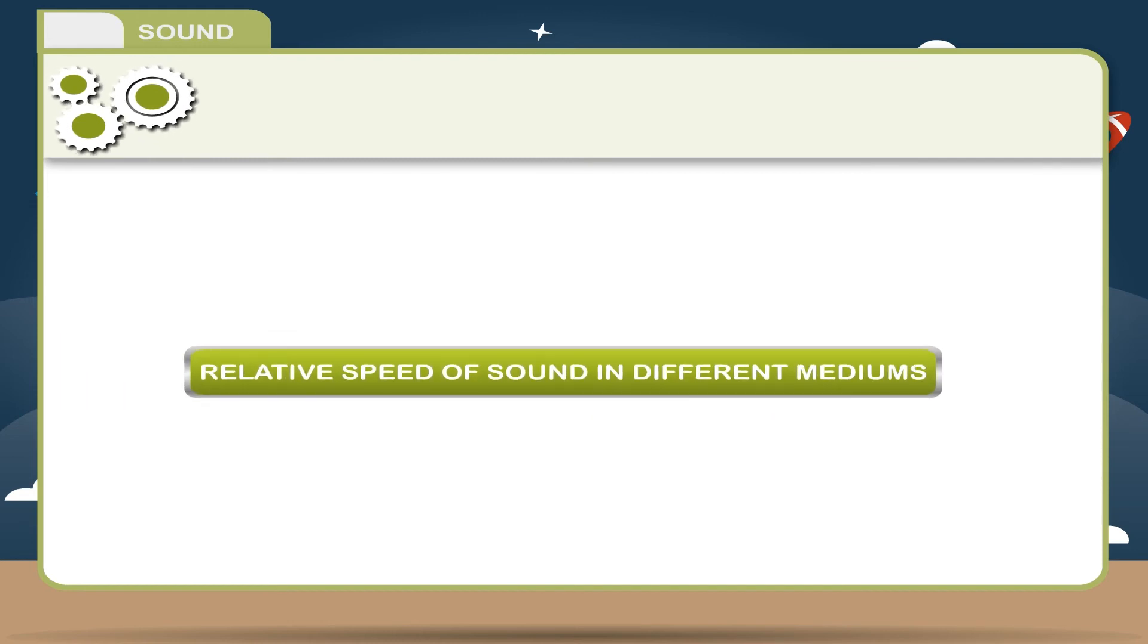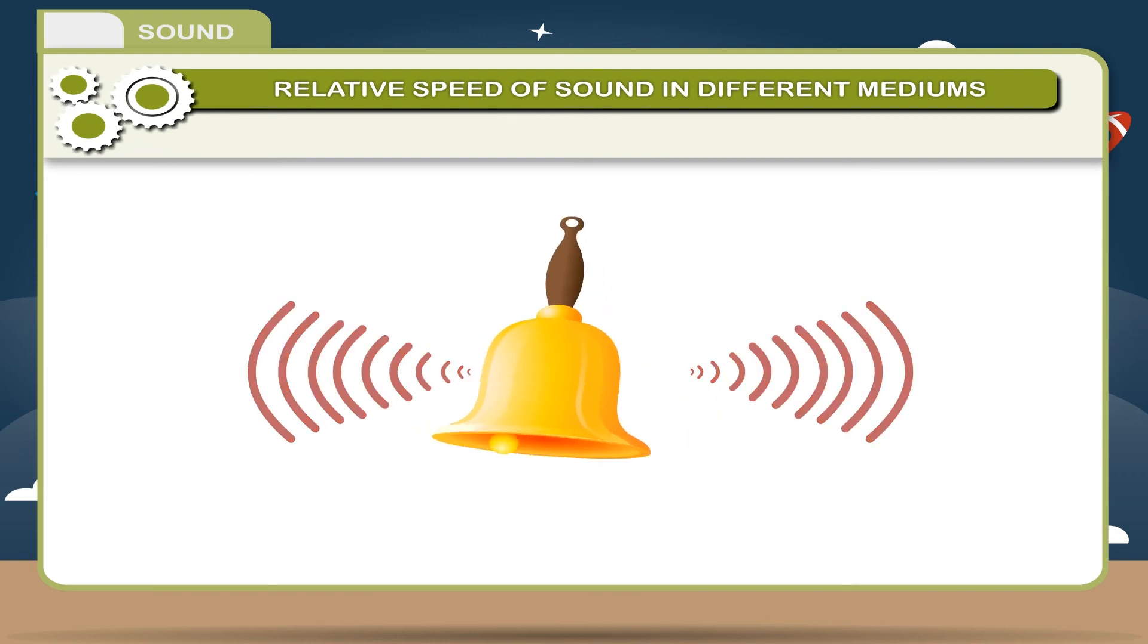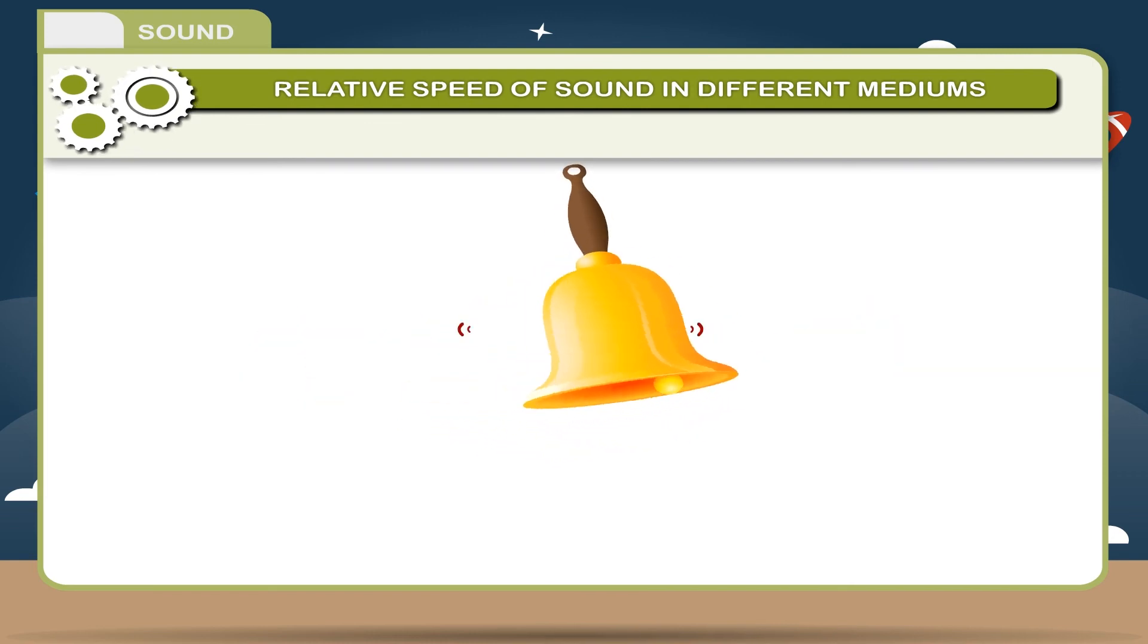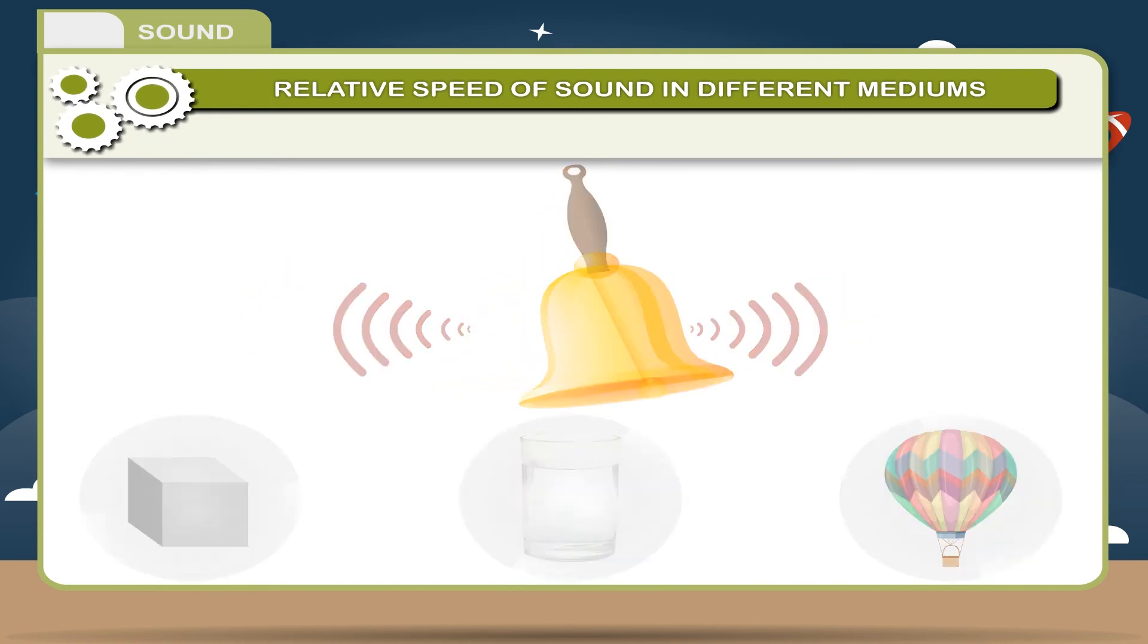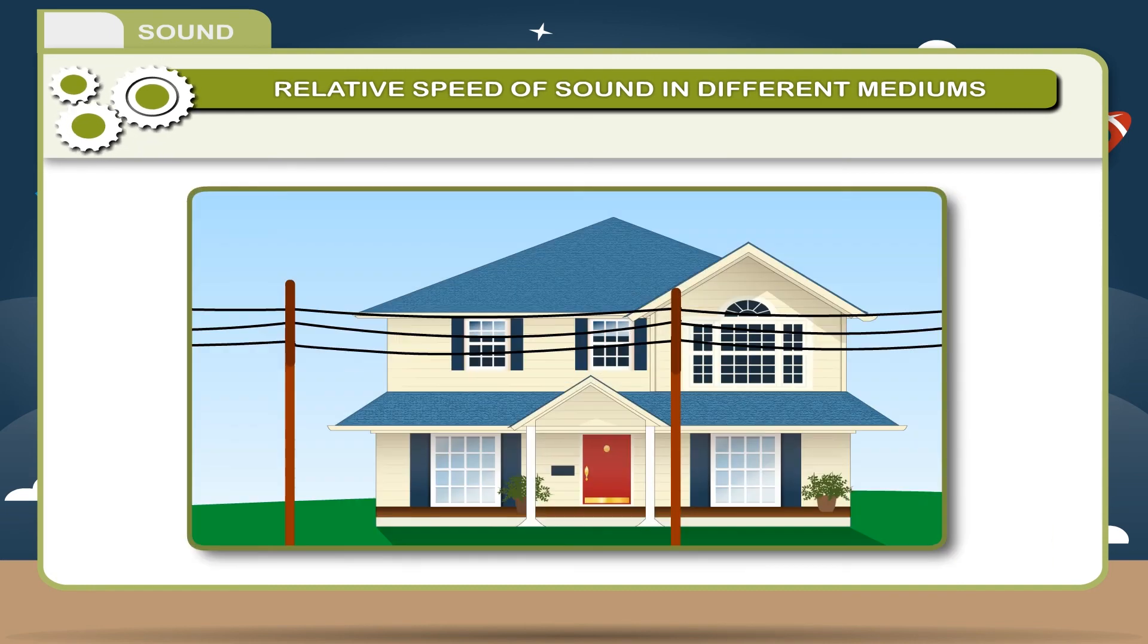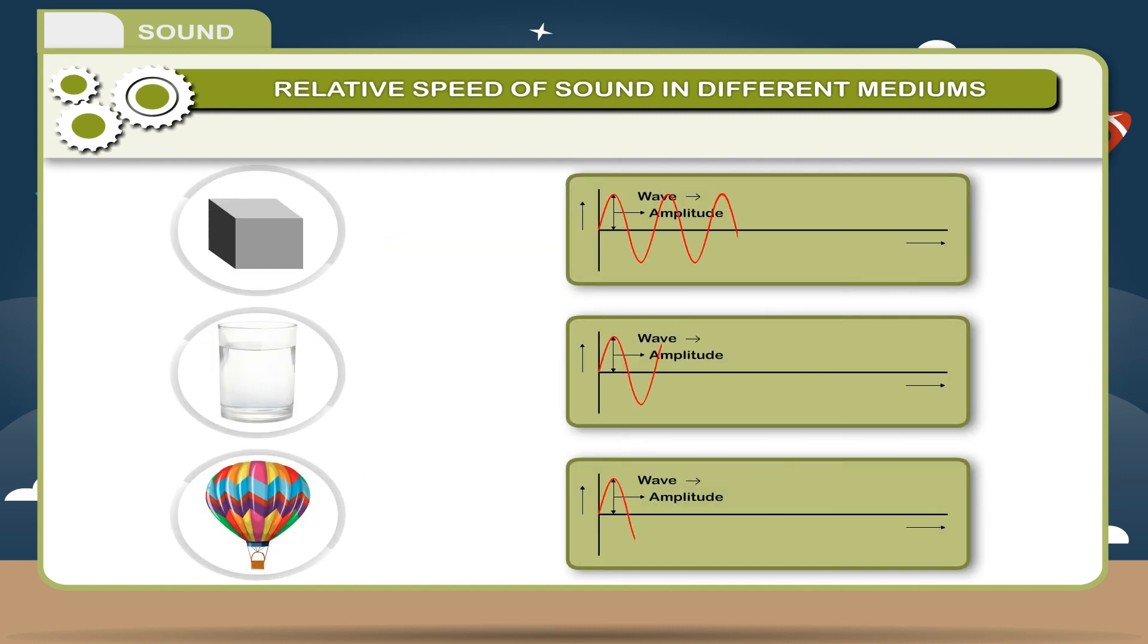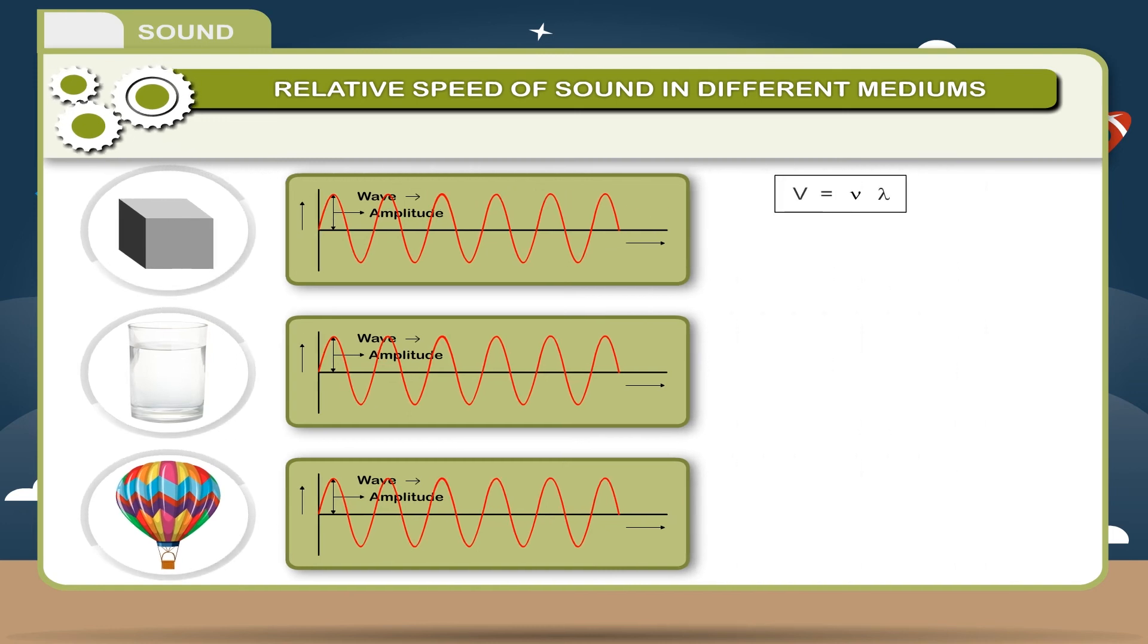Relative speed of sound in different mediums. Sound waves can travel through different media, e.g. solids, liquids and gases. The speed of sound wave depends on two factors: A. Temperature of the medium and B. Elasticity. The speed of sound is maximum in case of solids, lesser in liquids and least in the case of gases.